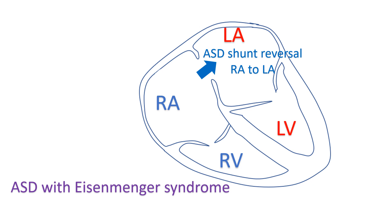All these right-to-left shunts due to pulmonary hypertension are called Eisenmenger syndrome. By the time it occurs, severe damage would have occurred in the pulmonary arterial tree due to long-standing high pulmonary blood flow. Reactive pulmonary hypertension becomes obliterative because of vascular pathology.